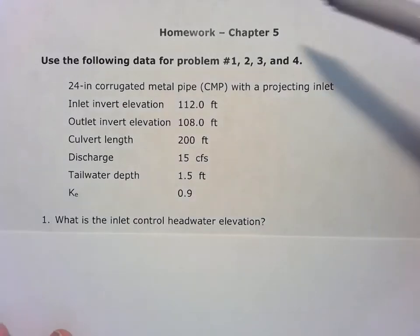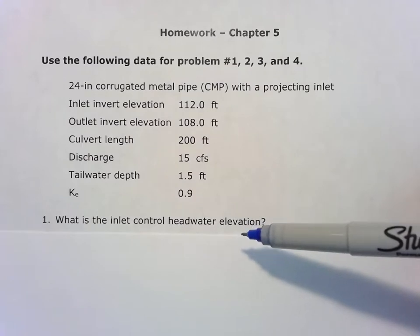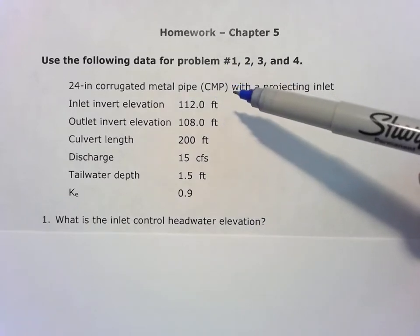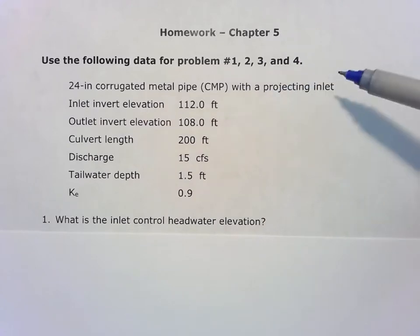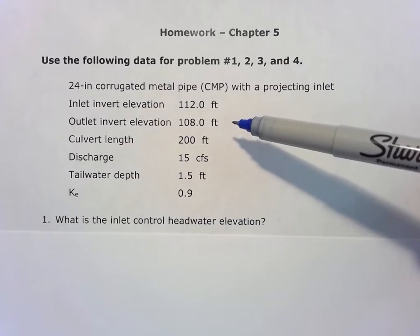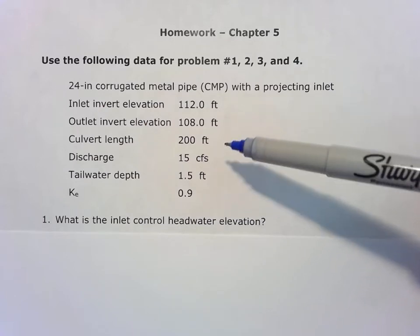On to hydraulics homework from chapter five. Problem one asks for the inlet control headwater elevation for a 24-inch corrugated metal pipe with a projecting inlet. The problem provides inlet invert elevation, outlet invert elevation, and culvert length. We don't need that yet. Discharge is given.